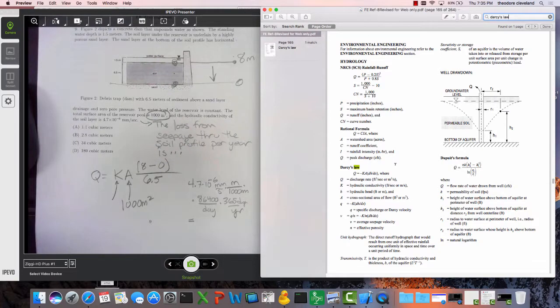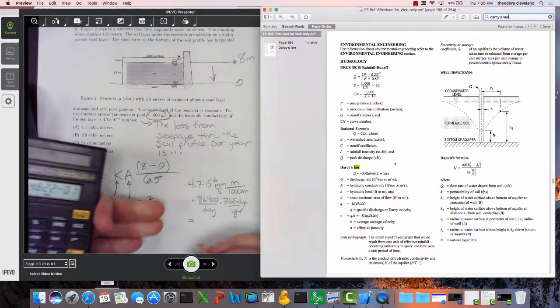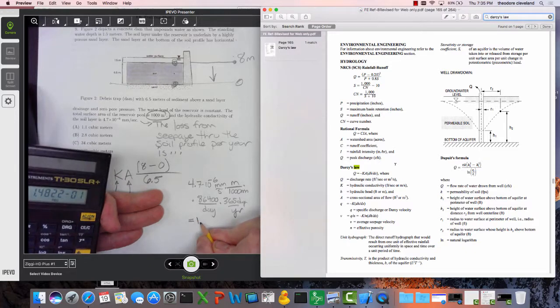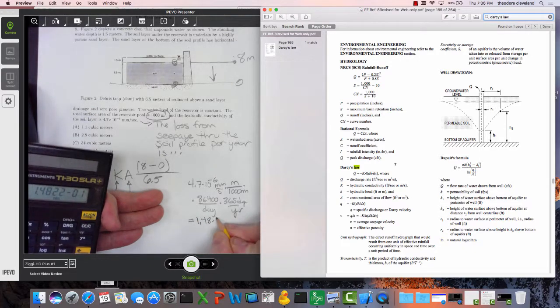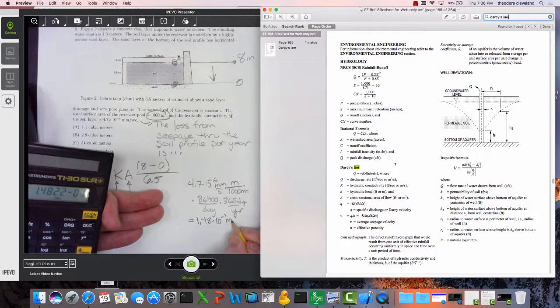And that's going to equal a number and we use this to figure out what that number is. 4.7 e minus 6 times 86,400 times 365 divided by 1000... I get 1.4822 times 10 to the minus 1 meters per year.